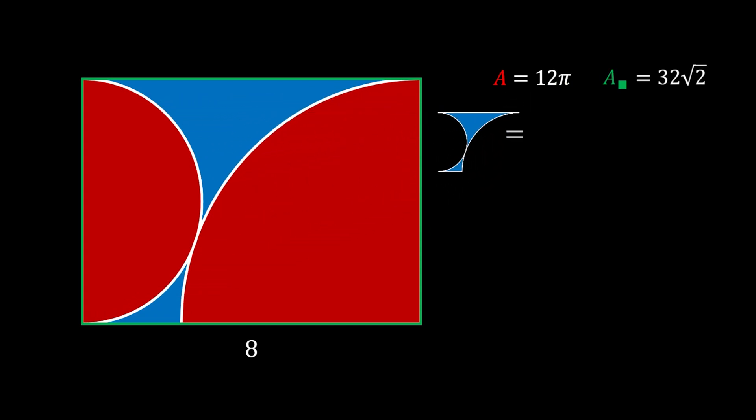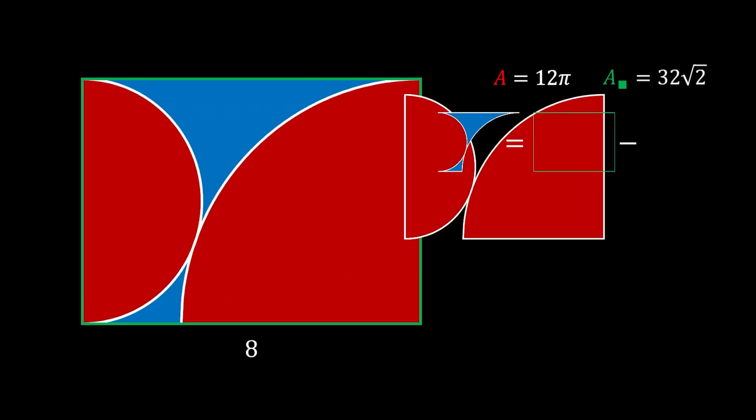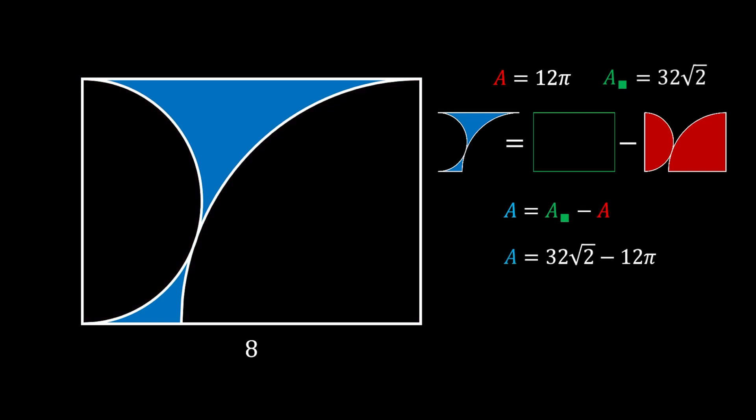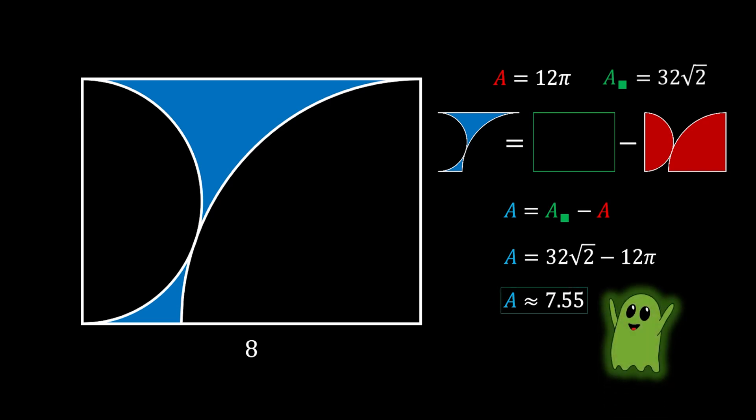Now it's easy for us to find the value of our wanted blue shaded area. Since it will be equal to the area of our rectangle minus the red area of these combined two circular segments. We can write down this as a formula. Now we can just substitute our values and we will get that the blue area is equal to 32 square root of 2 minus 12π. And of course you can approximate this to 7.55 square units and this is our solution.